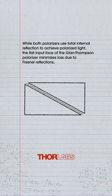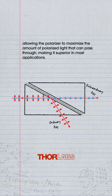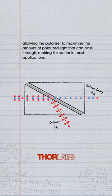While both polarizers use total internal reflection to achieve polarized light, the flat input face of the Gland-Thompson polarizer minimizes loss due to Fresnel reflections, allowing the polarizer to maximize the amount of polarized light that can pass through, making it superior in most applications.